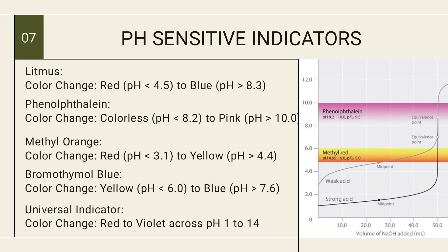The universal indicator shows a color change from red to violet across the entire pH range of 1 to 14. The titration curve graph shows the strong acid region, the equivalence point, and the midpoint — where half of the acid and half of the base have reacted.